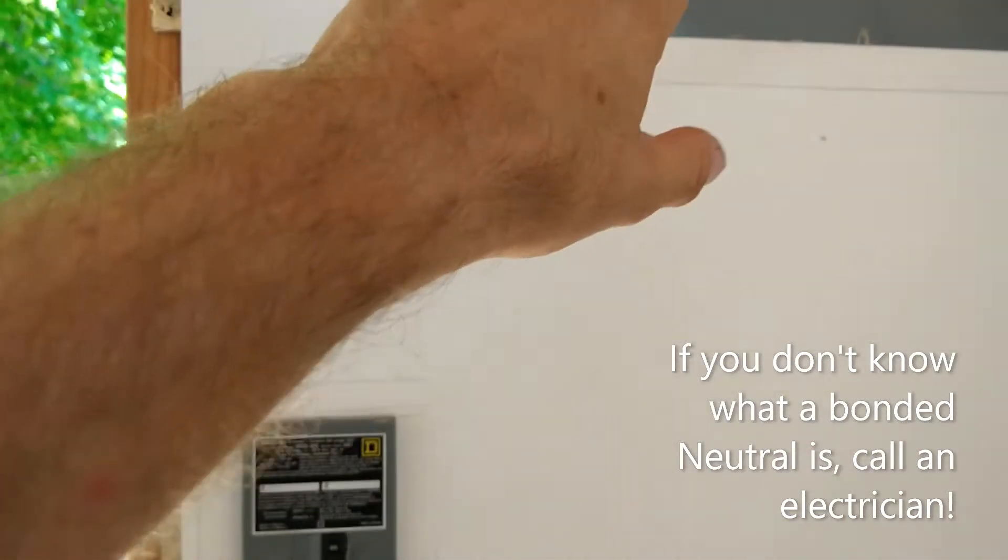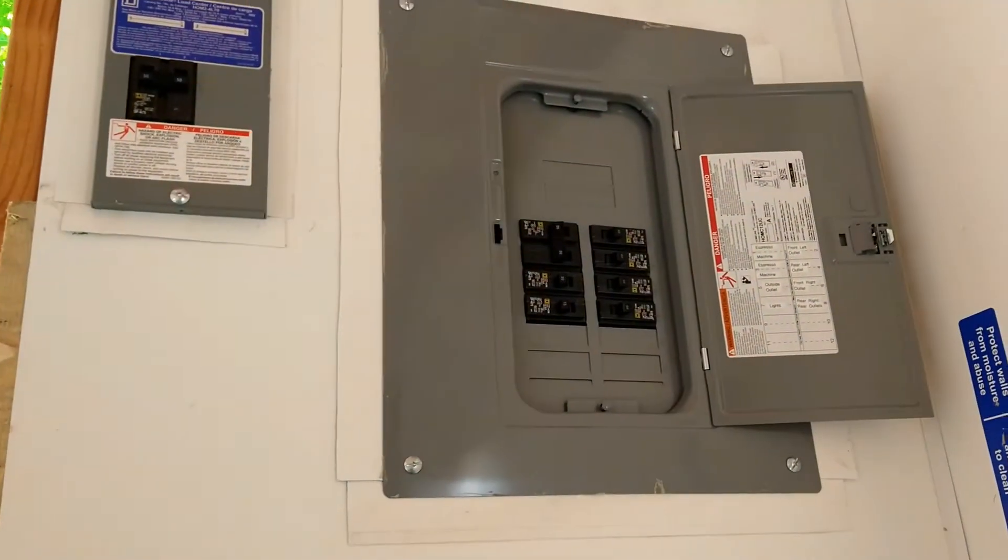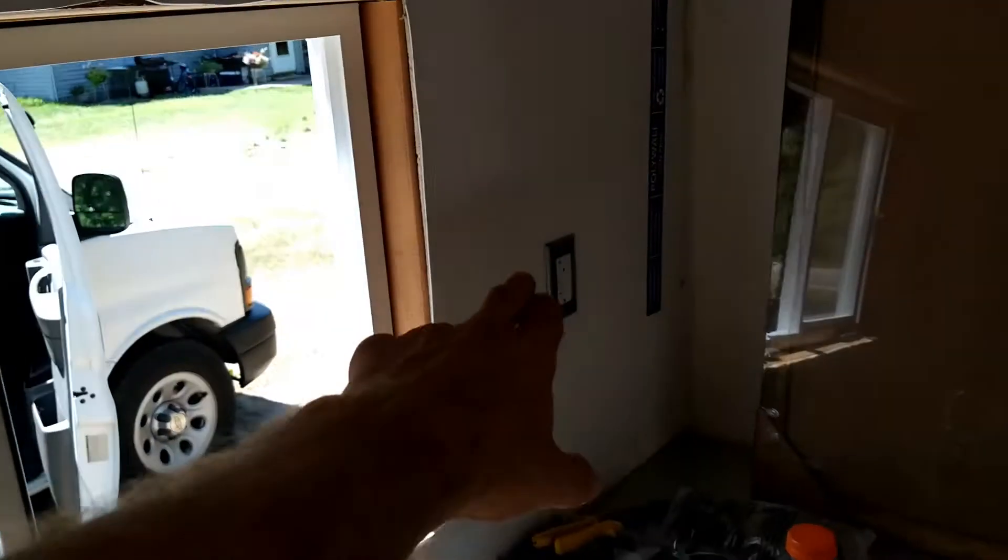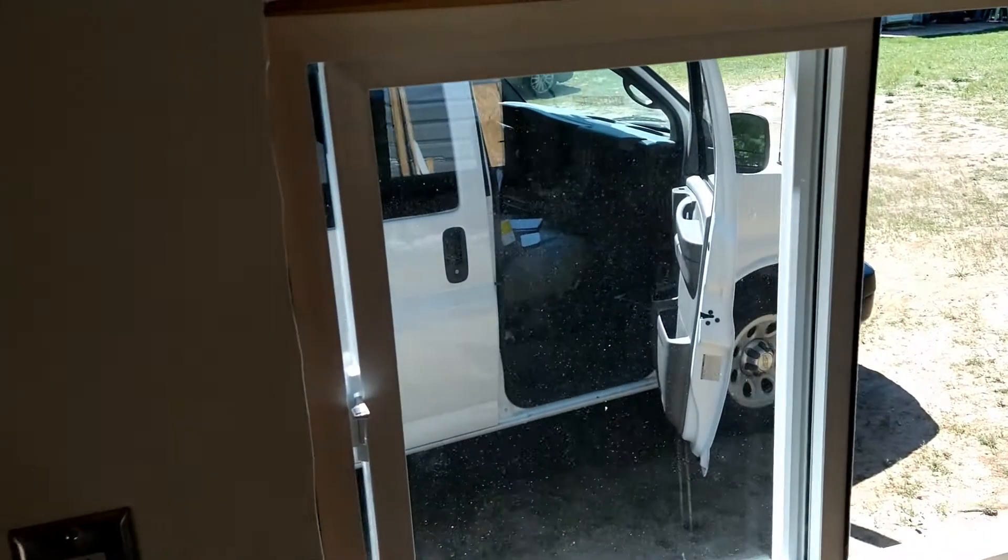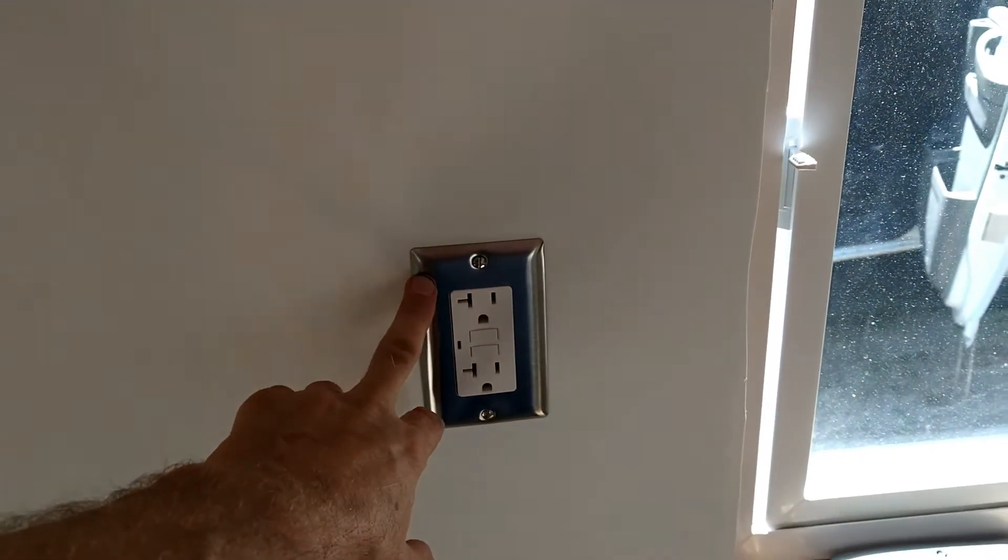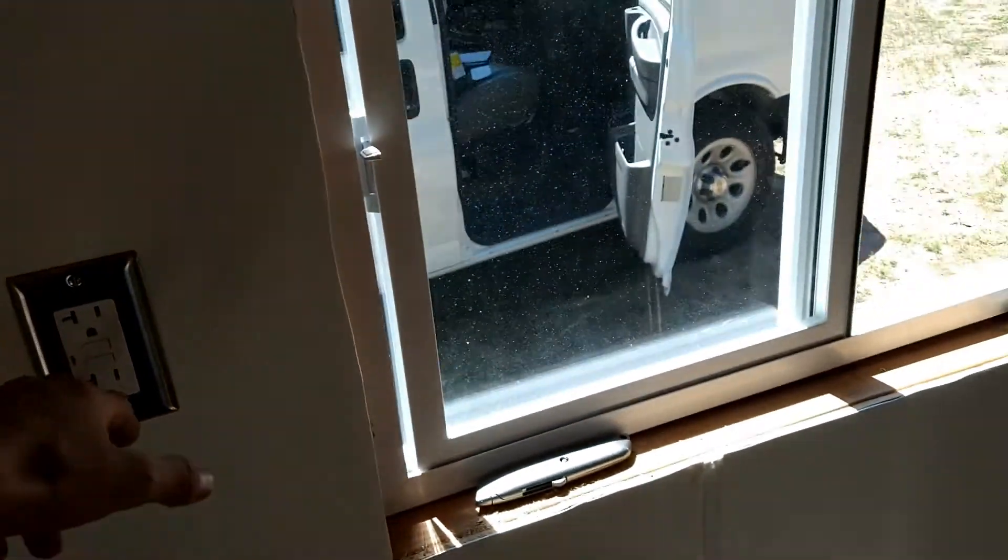Panel feeds these top outlets. Each one of them has its own breaker - 20 amp breaker to each one of these 20 amp GFCIs. 12 gauge wire behind it.